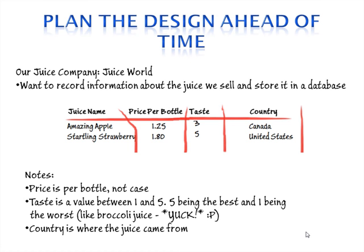We want to make sure we don't record the price per case, so that's something we'll have to use data validation to take care of. We also have a taste value between 1 and 5, and we're going to record the country the juice came from. This is the example we're going to use inside the lab and in future Access videos.